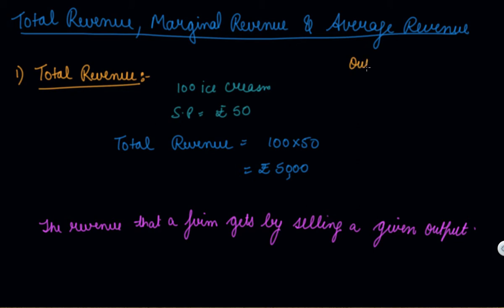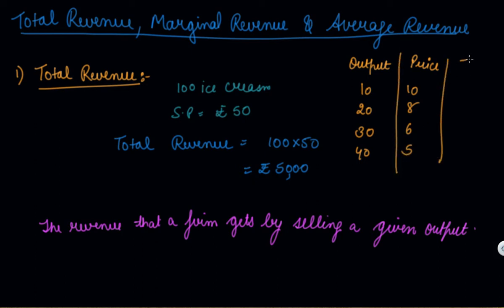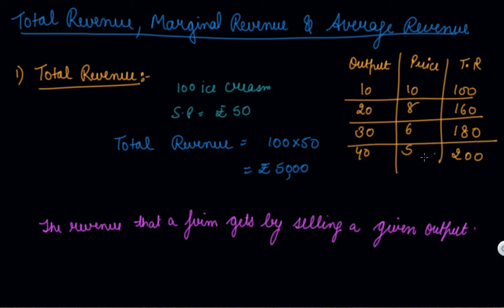Your output is 10, 20, 30, 40 and the price is 10, 8, 6, 5. You can calculate your total revenue as price into quantity: 100, 160, 180, and 200. This is how you calculate your total revenue.